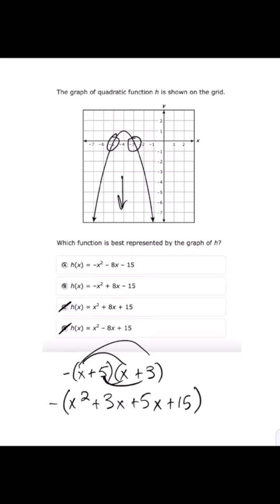From here I can combine my like terms of 3x and 5x. When I do that, I have x² + 8x + 15.